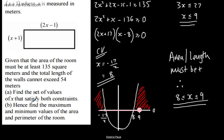Hence, find the maximum and minimum values of the area and perimeter of the room. So we'll look at the min when x equals 8, and the max when x equals 9.